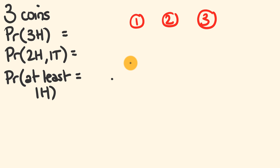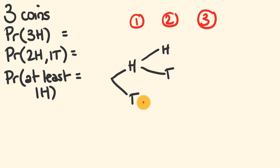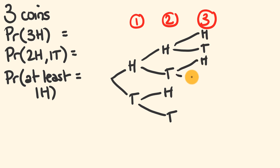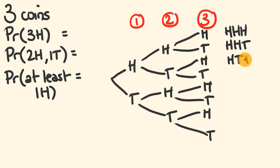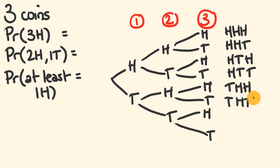For the second throw we could get heads or tails off each branch. For that third throw, it's the same again — heads or tails off each branch. Going through all the possible outcomes: heads-heads-heads, heads-heads-tails, heads-tails-heads, heads-tails-tails, tails-heads-heads, tails-heads-tails, tails-tails-heads, and tails-tails-tails. Counting them up, there are eight outcomes altogether.